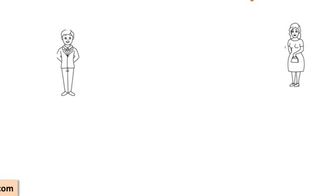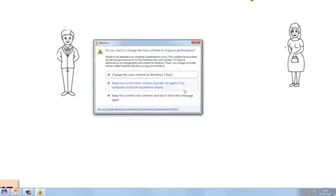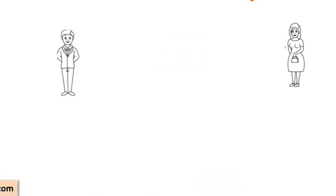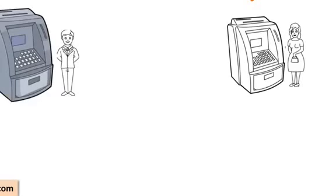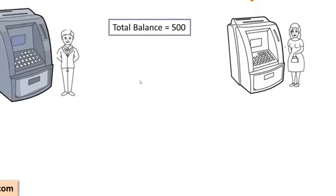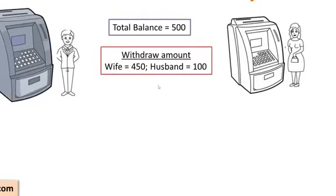Let us see why thread safety is of paramount importance in multi-threaded applications. Consider an example where there is a husband and wife — a couple — who have a joint account. Both of them have ATM cards and go to ATMs to withdraw some amount, and they have a balance of 500 in their account. The wife tries to withdraw an amount of 450 and the husband tries to withdraw an amount of 100.